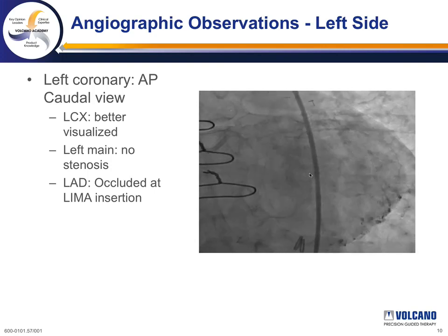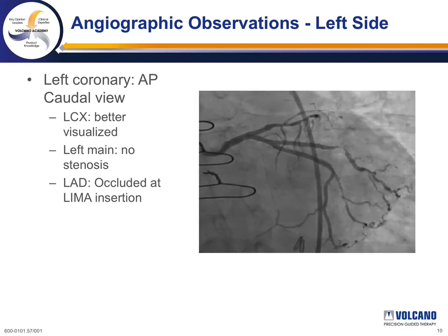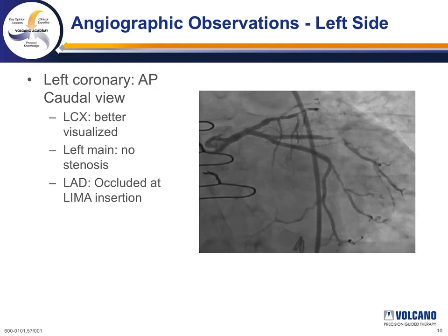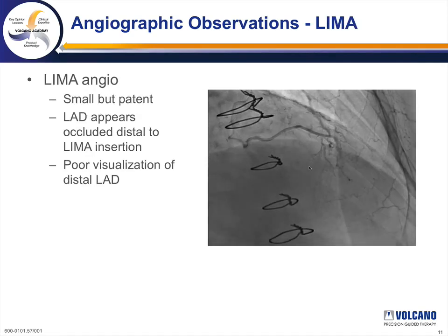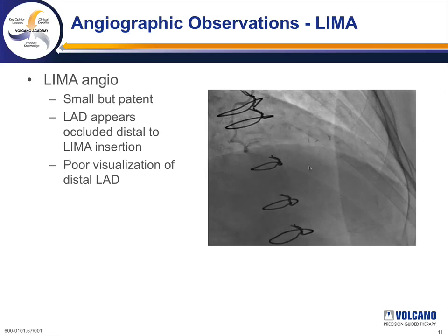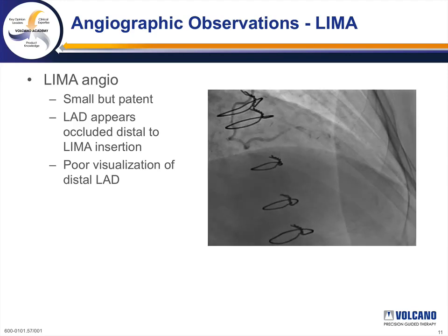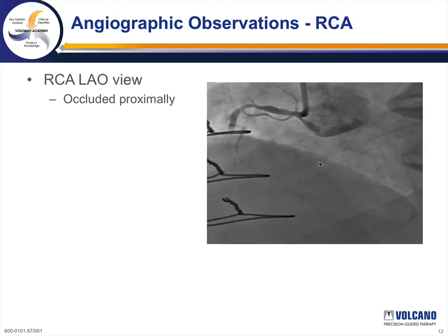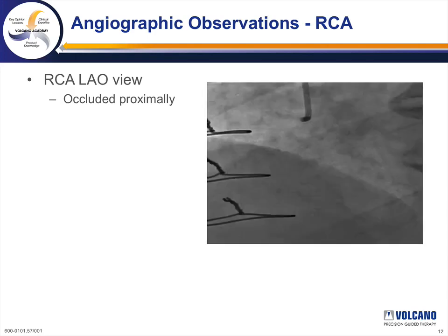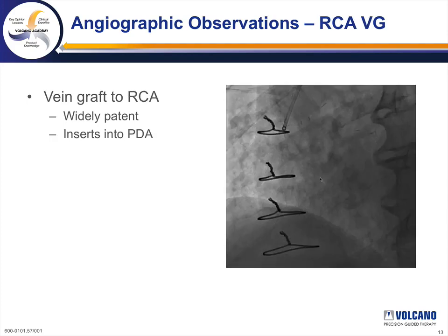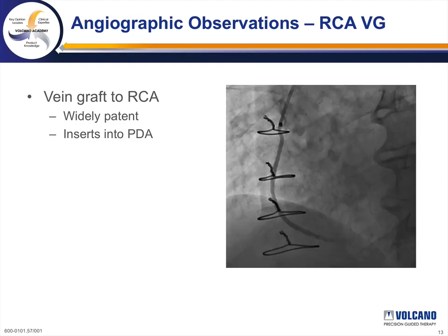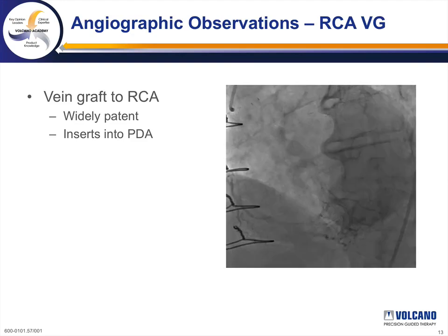The left main coronary artery appeared free of significant stenosis, and the LAD appeared to be occluded at the insertion of the internal mammary artery graft. Injection of the left internal mammary artery showed it to be small but patent, inserting into the mid-LAD but supplying only a very short segment before a more proximal and distal occlusion. The distal LAD was very poorly visualized. The native right coronary was occluded after the shepherd's crook. The vein graft to the right coronary was widely patent with insertion into the posterior descending artery, which appeared diffusely diseased distally, as did a small posterolateral branch.